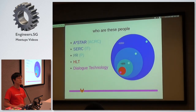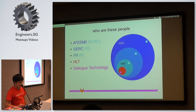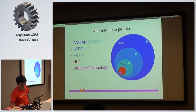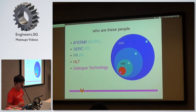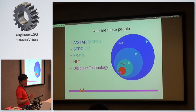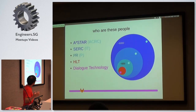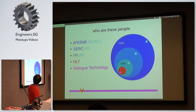For those of you who know me, thanks for staying after the pizza. I'm in a dialogue technology team — that's the purple bubble at the bottom. We are six people, part of a 60-person department doing language technology, part of a 600-strong institute that does infocom research in one half of A*STAR, which is a total of 6,000 people.